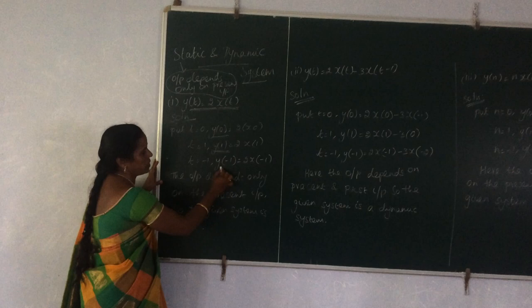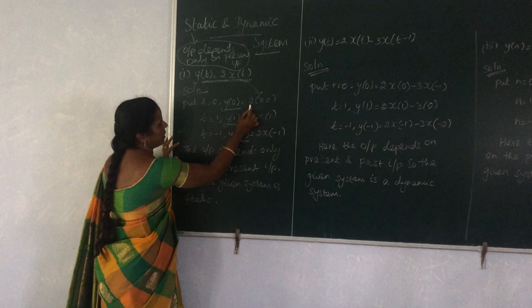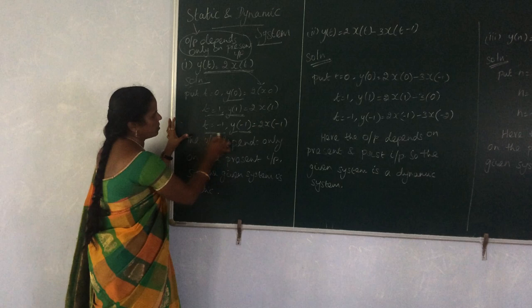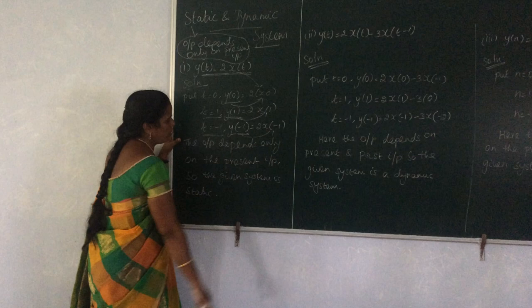Substituting t = 0, we get y(0) = 2·x(0). Taking a positive time sample t = 1, we get y(1) = 2·x(1). When t = -1, we get y(-1) = 2·x(-1). In each case the output depends only on the present input, so the given system is a static system.